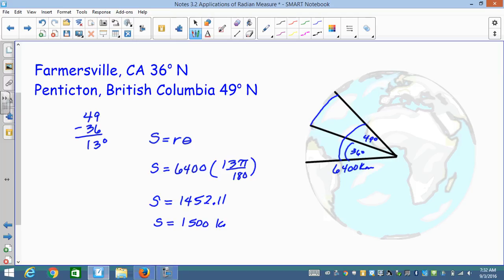Two significant digits gives us S equals 1500 kilometers. Don't forget your kilometers. I know I did on the last one, but it's okay. We'll survive. Just don't forget again.